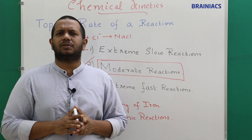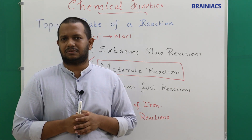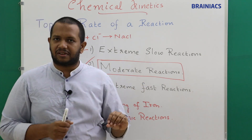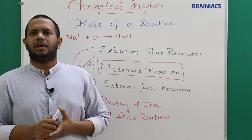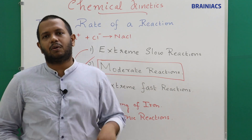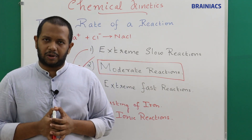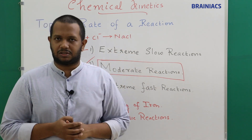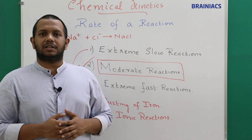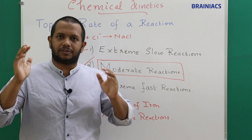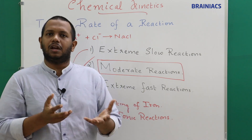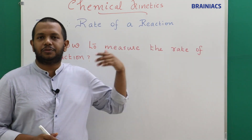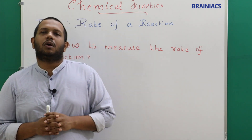That brings us to our major class: moderate reactions, for which we measure the rate. Generally speaking, all organic reactions are considered moderate reactions whose rate can be measured — though there are exceptions. This was the introduction. Now in the next topic, we will deal with how to measure the rate of a reaction and how scientists arrived at the idea of measurement.